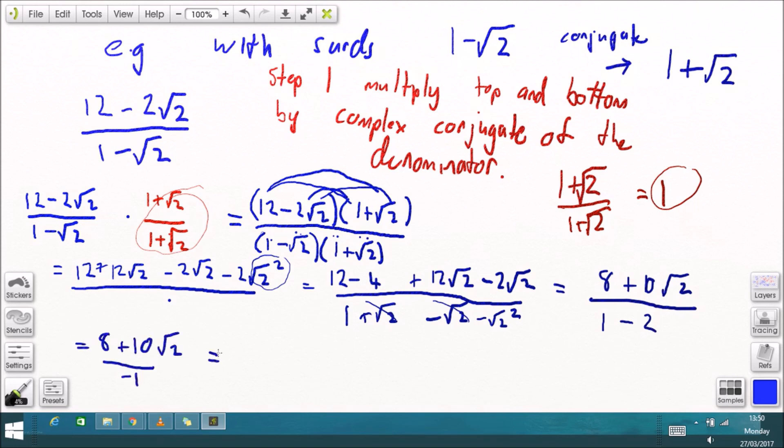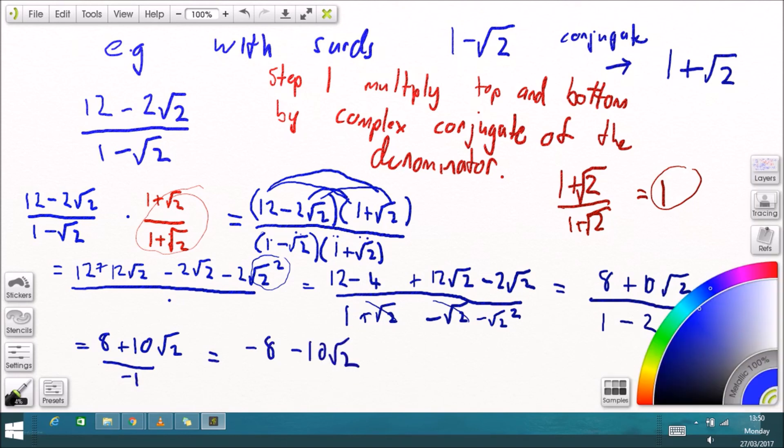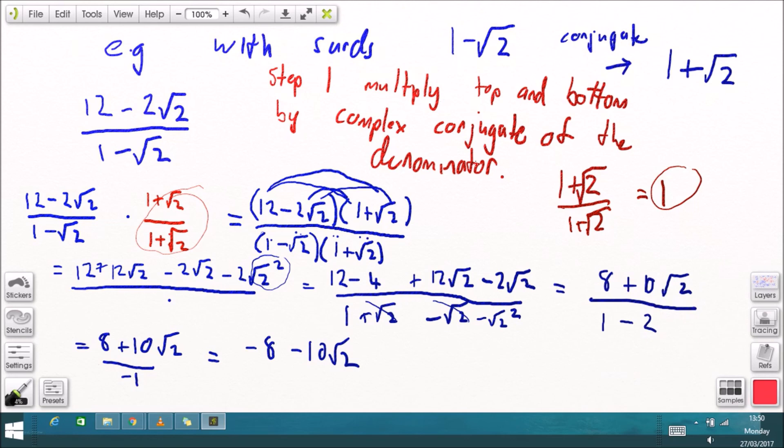so that will all be 8 plus 10 root 2 over negative 1 which we can write as negative 8 minus 10 root 2.